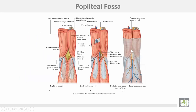This diamond-shaped space forms the popliteal fossa, and its contents include: the two terminals of the sciatic nerve — the common peroneal and tibial nerves — then the popliteal vein and popliteal artery.